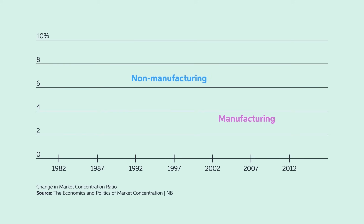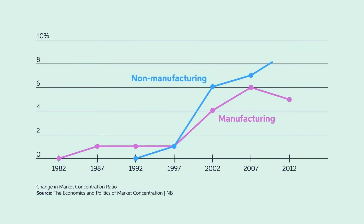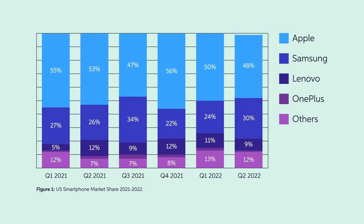In the last few years, market concentration has increased dramatically. In the non-manufacturing sector, the concentration ratio — which is the market share held by the largest companies in an industry — passed from 1% to over 9% from 1997 to 2012. Those numbers hide a high degree of variability. In some industries, the current level of market concentration is extreme.